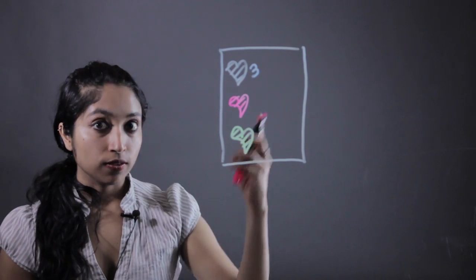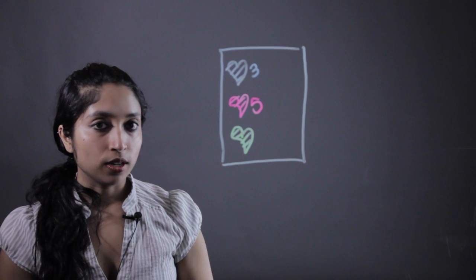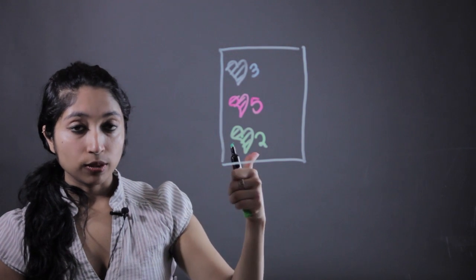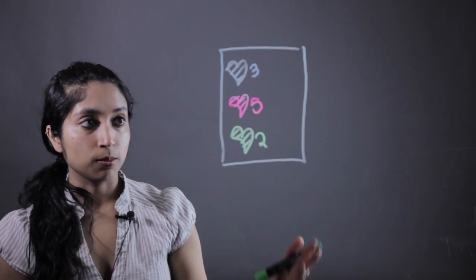Or write the number five in the pink heart and two in the green heart, however many there are. So they practice counting, sorting, and one-to-one number recognition.